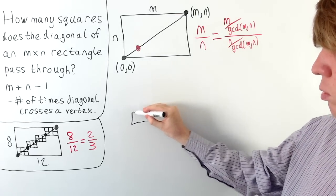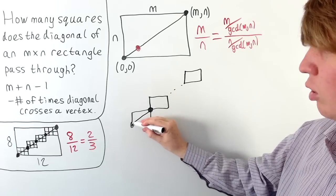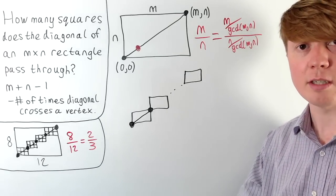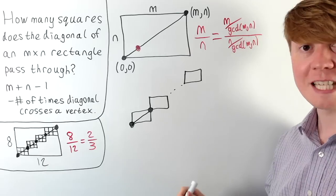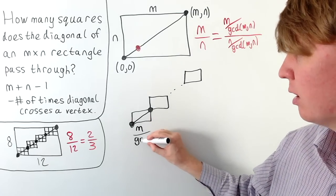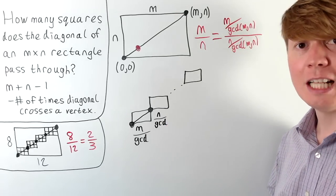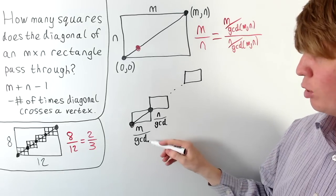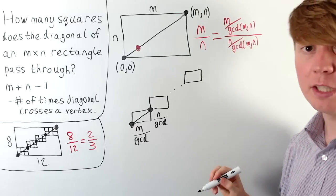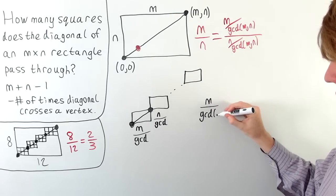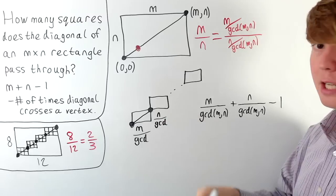Each small rectangle has width m/GCD(m,n) and height n/GCD(m,n). Within each small rectangle the diagonal doesn't touch any interior vertices, so we apply the formula directly: the number of squares the diagonal passes through in one small rectangle is m/GCD(m,n) + n/GCD(m,n) − 1, with no additional vertex correction needed.